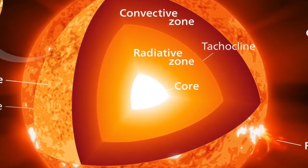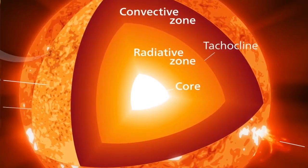Once energy and particles of light leave the core, they have to travel through the radiative zone to reach the surface. What's interesting is that it takes almost a hundred thousand years for a particle of energy or light to travel from the core to the surface.